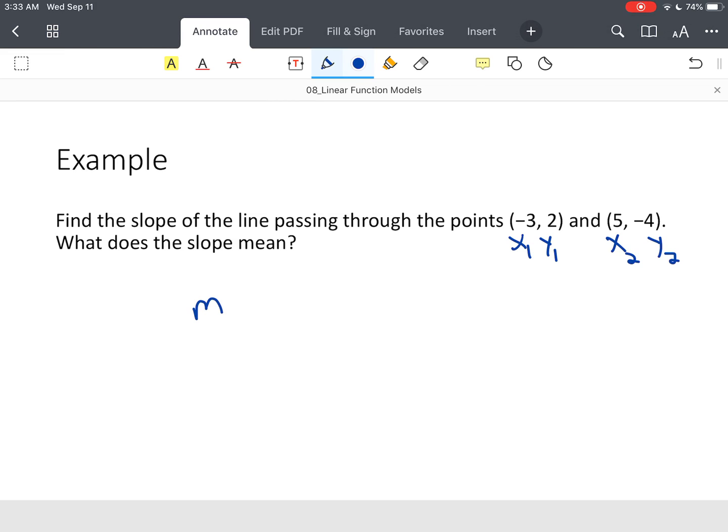Alright, so now we have a formula for slope, and it says it's the vertical change over the horizontal change or the difference in your Y coordinates over the difference in your X coordinates.